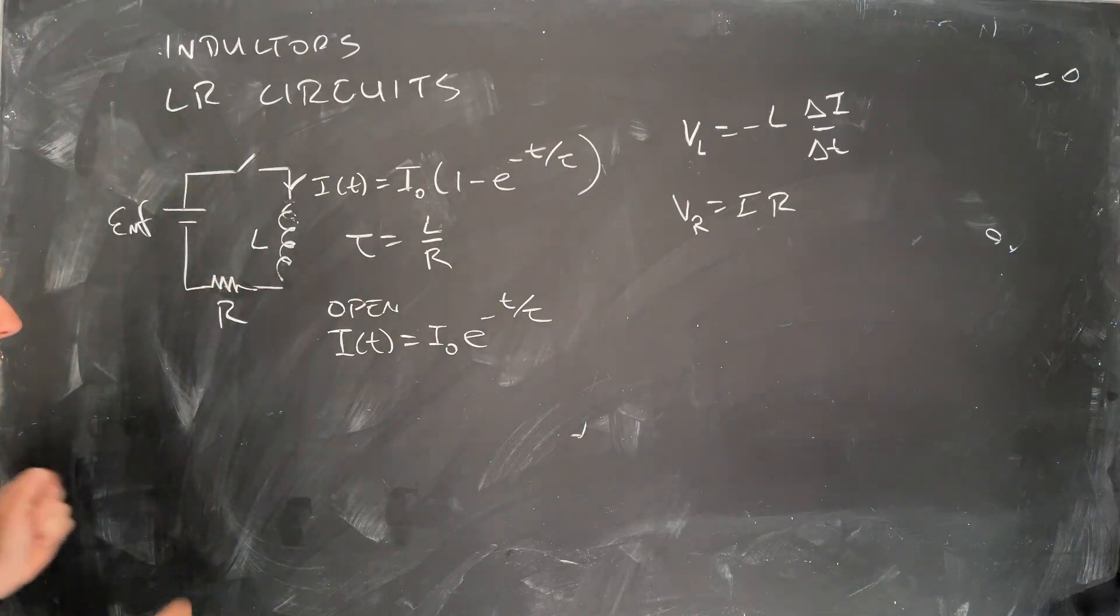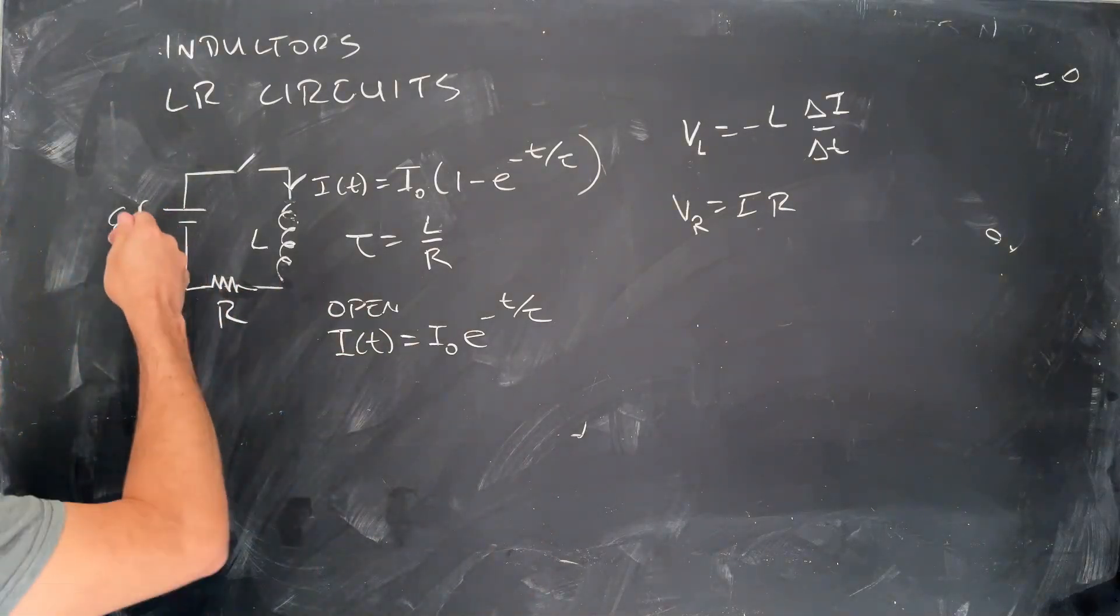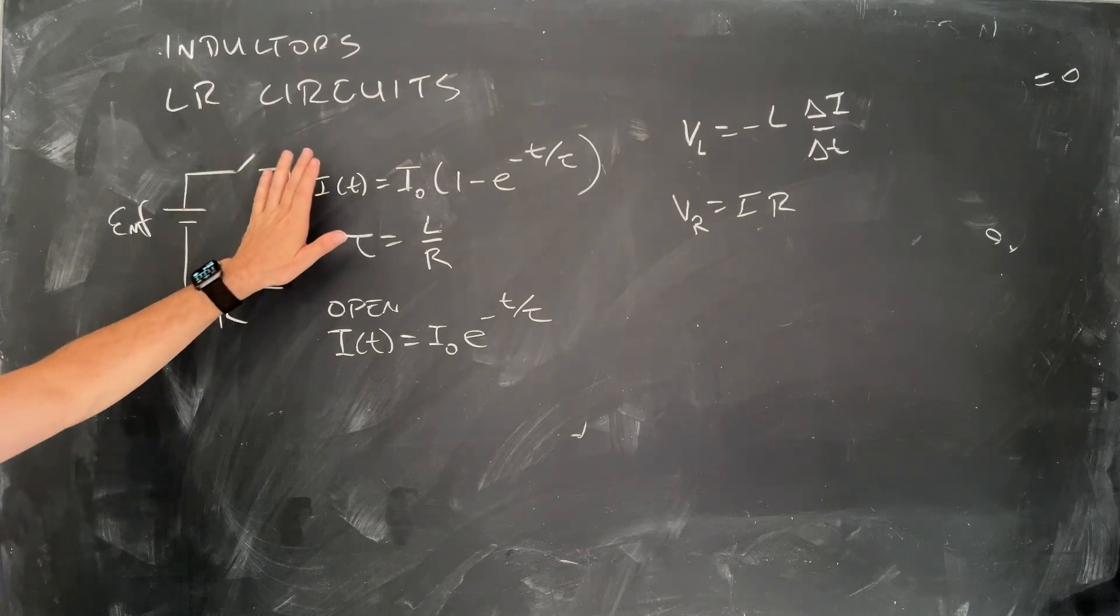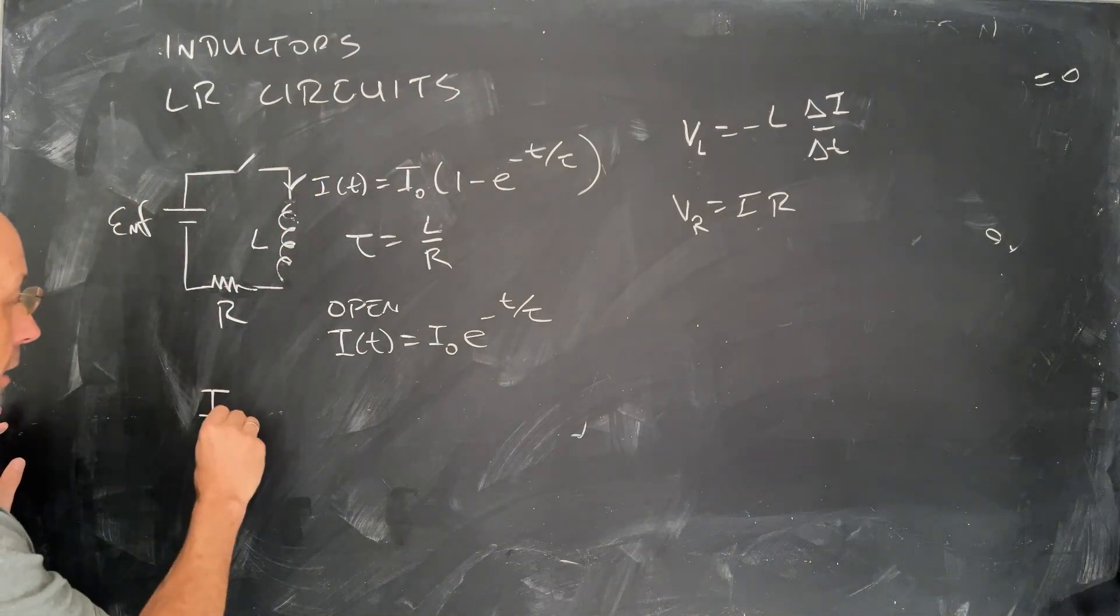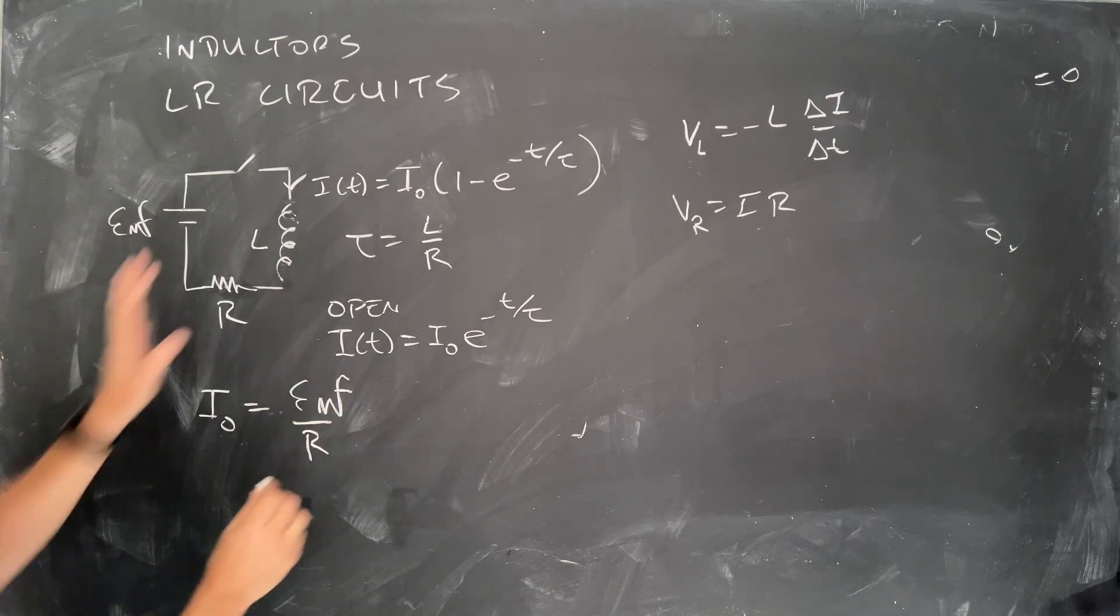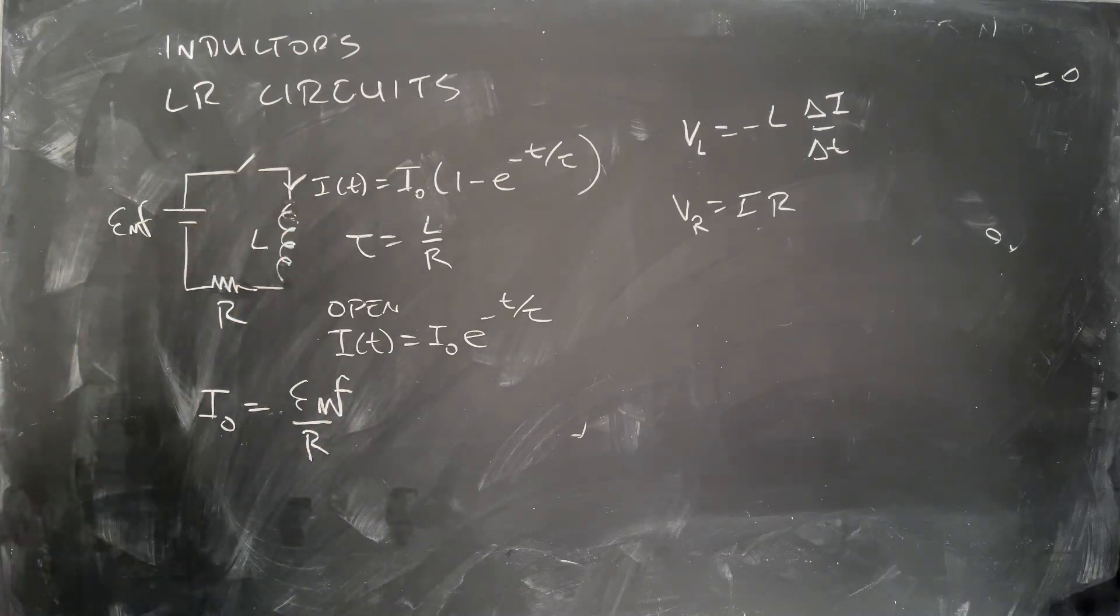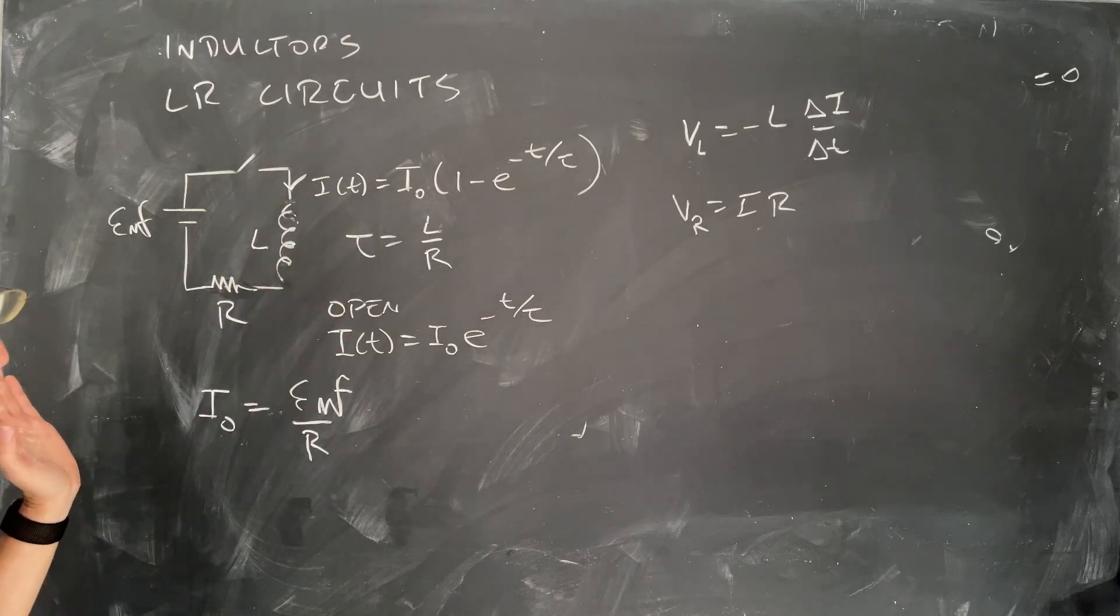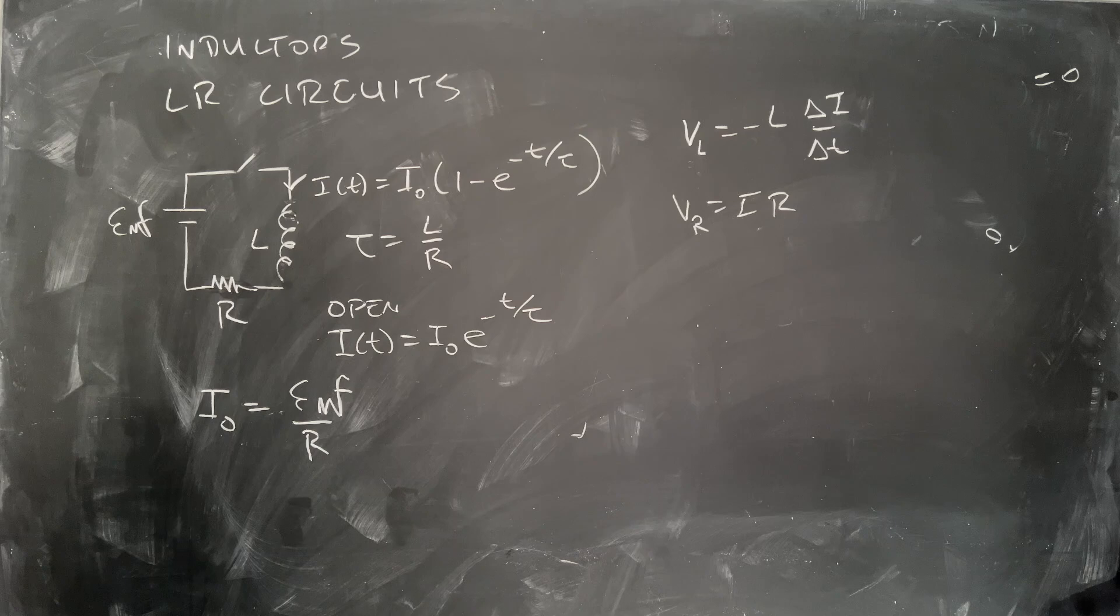When I close that switch, I can't go from zero current to the I zero current. I zero current would be the steady state current. In this case, I zero is going to be equal to the EMF over R. It can't just go there instantly. It's got to take time, because it can't change from zero to I zero in zero time. That's an infinite potential.